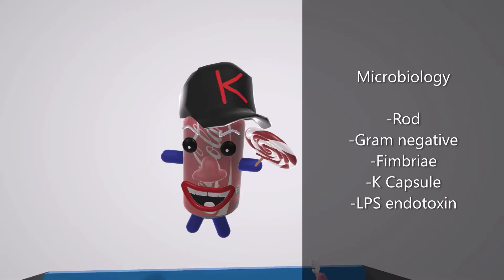And finally over here we notice the lollipop that he is holding — lollipop for lipopolysaccharide, LPS. E. coli has an LPS endotoxin which has important functions which we'll talk about soon.